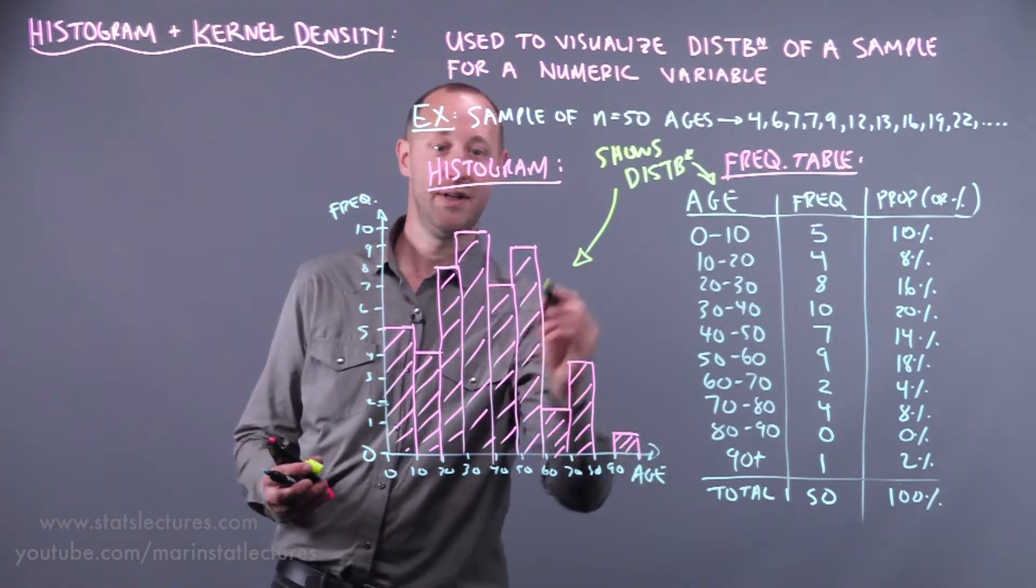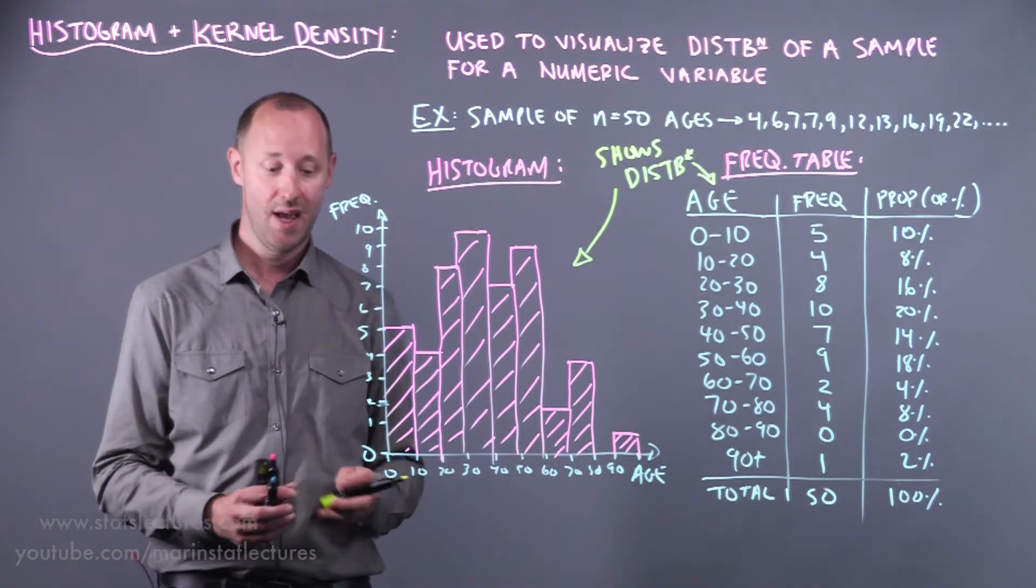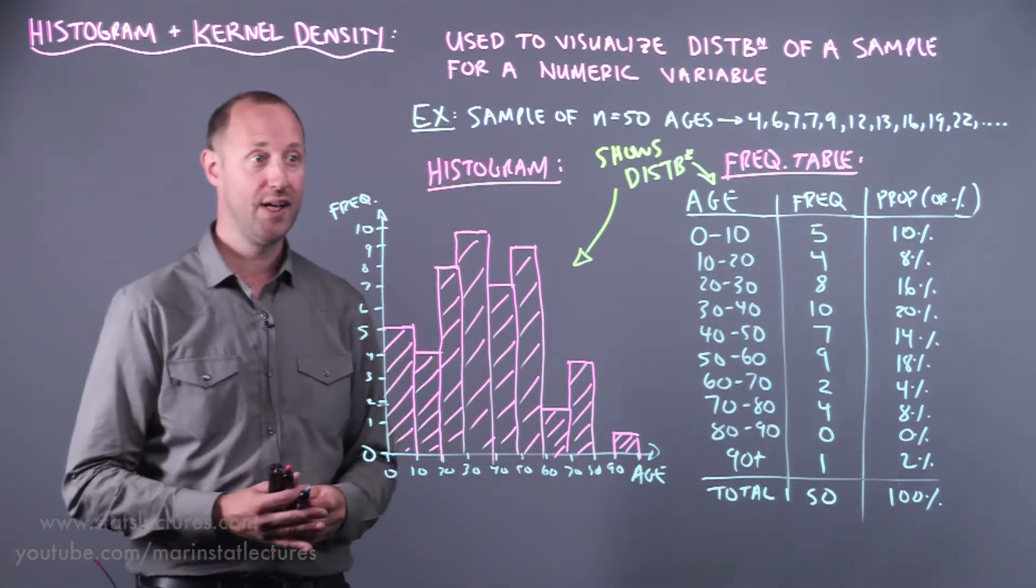Now again another keyword. This here is a nice visual. Right again it shows us the distribution. How are people distributed for the variable age?